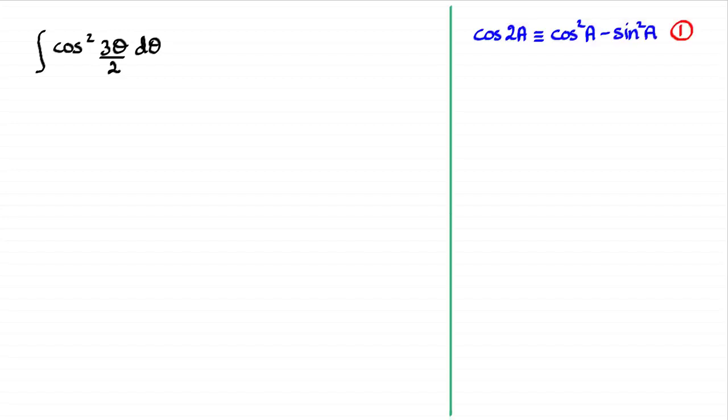Well, you need to turn to the double angle identities which you should be familiar with. You may find that you've got this one written in a formula book. So cosine 2a, twice an angle, is identical to cos squared a minus sine squared a, and I've called this equation 1. And the other identity that you should be familiar with is this one: sine squared a plus cos squared a is identical to 1.